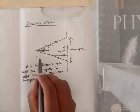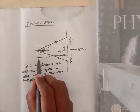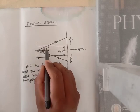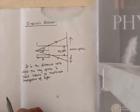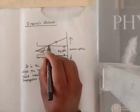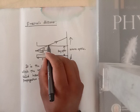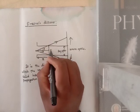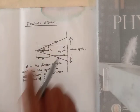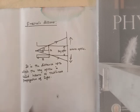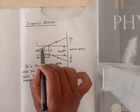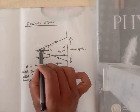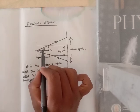In this diagram, up to a certain point ray optics is obeyed. We take the width of the slit as a distance denoted by A. From the center point it makes an angle theta, so totally it makes an angle of 2 theta.